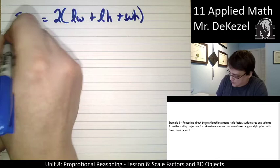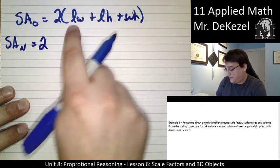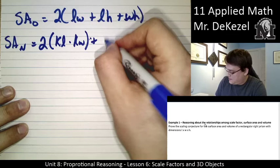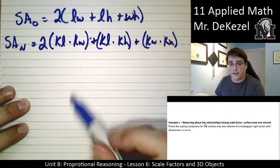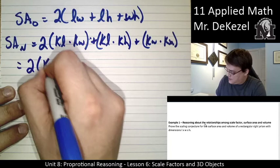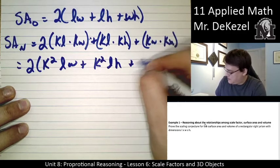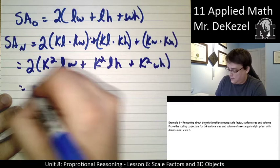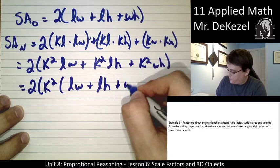For a new, let's say, larger object, so the surface area of the new object is equal to 2, and then we have to put in a scale factor of k for each of these. So, kL times kW plus kL times kH plus kW times kH. I've added a scale factor in for each one of these. And if I multiply in each one here, k times k, that's k squared. So, we would have 2 times k squared LW plus k squared LH plus k squared WH. And now, I can factor out a k squared from here because it's common in each one. It would equal 2 times k squared times length times width plus length times height plus width times height.